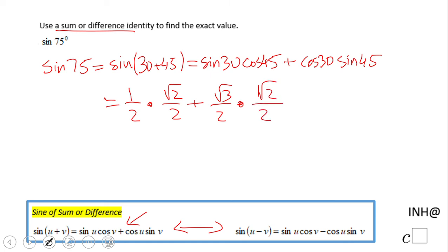Okay, so we have here square root of 2 over 4 for the first part of this numerical problem, plus square root of 6 over 4.